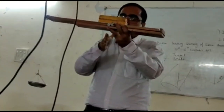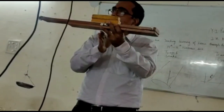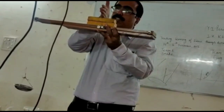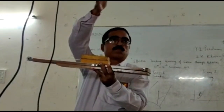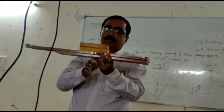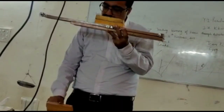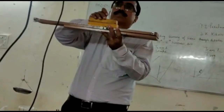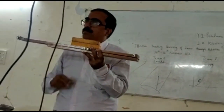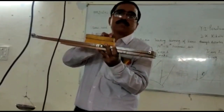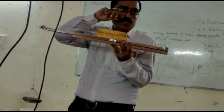The weight of the body acts in the downward direction and the normal reaction works opposite to weight — upward. Friction depends on normal reaction; friction is directly proportional to normal reaction.